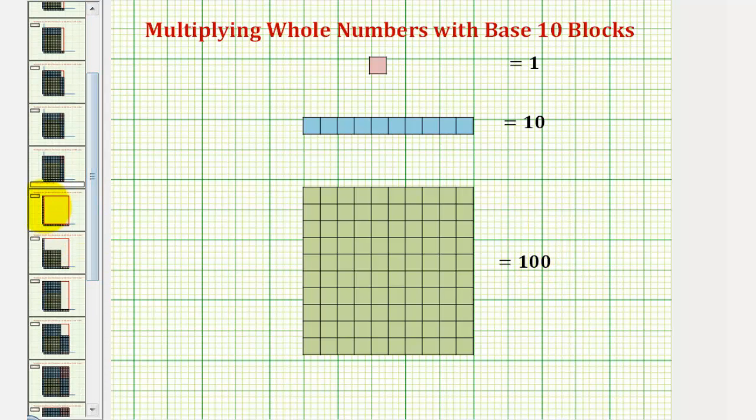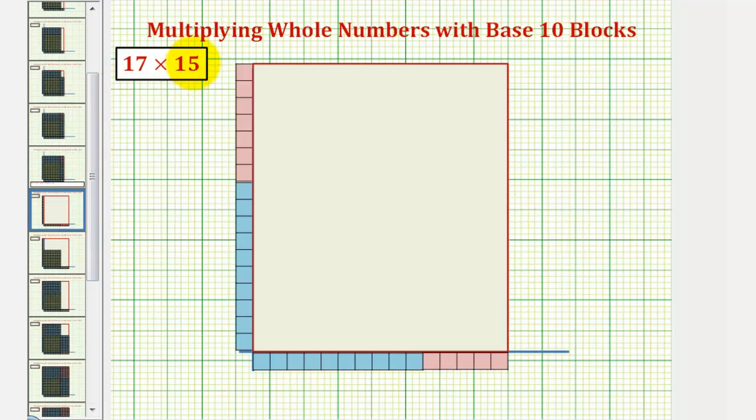For this example, let's model 17 times 15. So we'll model 17 vertically and 15 horizontally. Notice for 17, we have one 10 block and seven 1 blocks. And then for 15, horizontally, we have one 10 block and five 1 blocks.